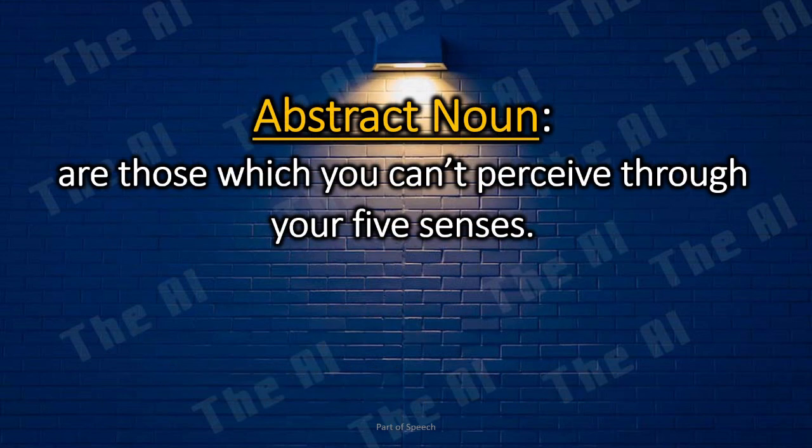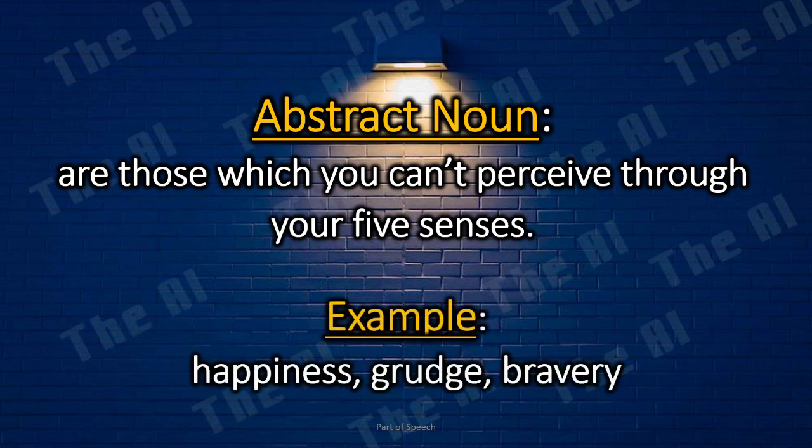Abstract nouns are those which you can't perceive through your five senses. Examples: happiness, grudge, bravery.